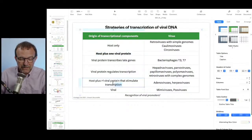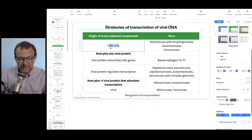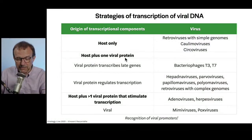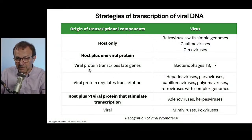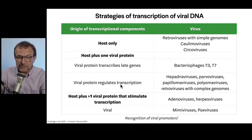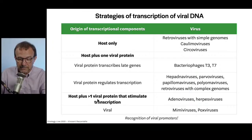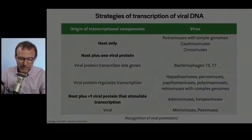Then we have host plus one viral protein — bacteriophages where the viral protein is involved in transcription of the late genes, and for other viruses where the viral protein regulates transcription. Then there's more than one viral protein involved, as in adenovirus and herpes viruses. And finally, mimiviruses and poxviruses encode the entire transcriptional machinery — polymerase, accessory proteins, regulatory proteins — because they're in the cytoplasm and can't access the nuclear bureaucracy.